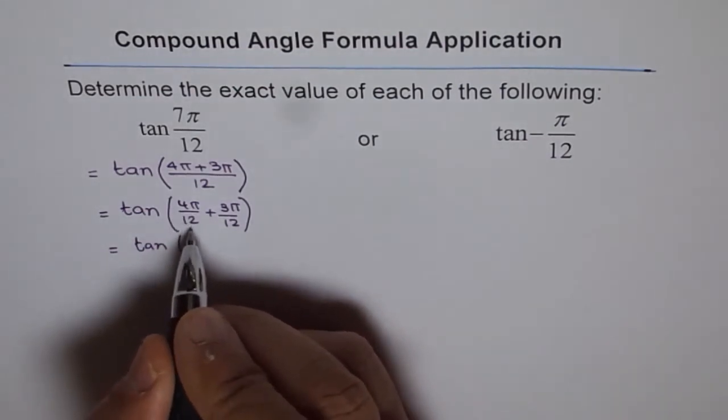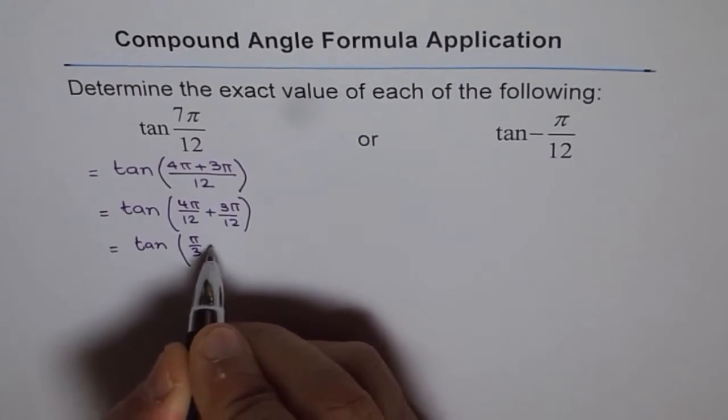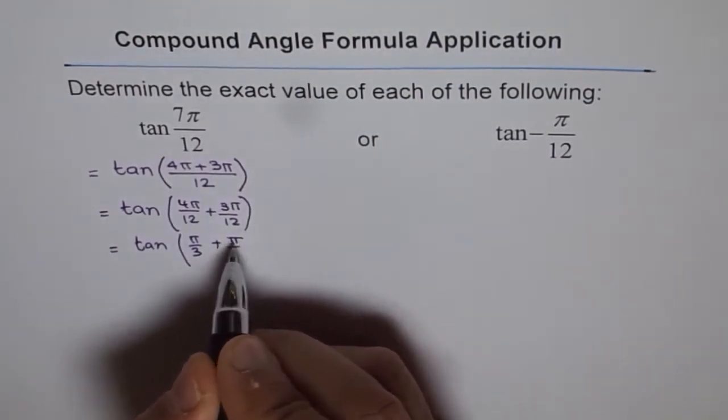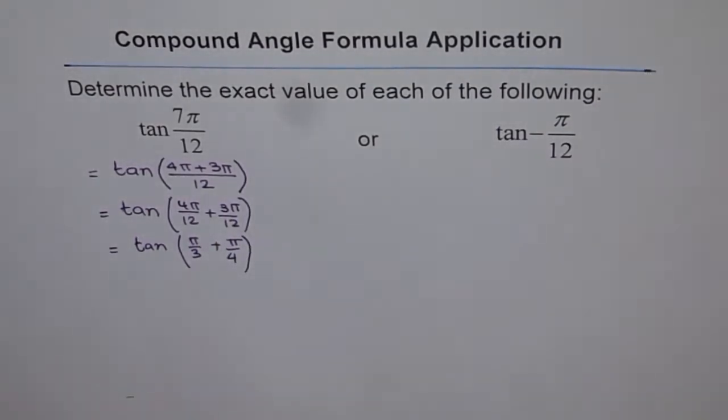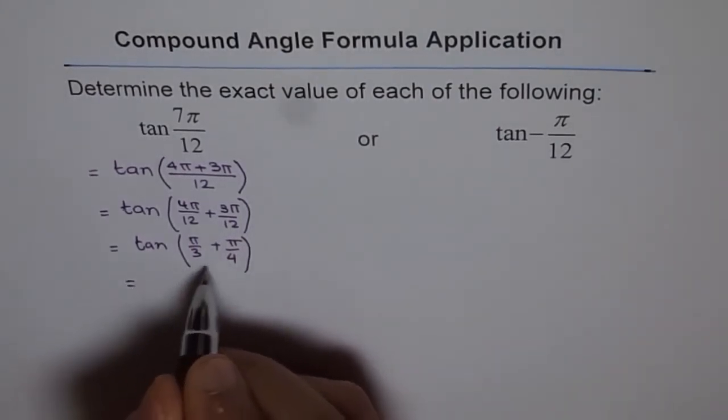So 4π/12 will be equal to, we can divide this and we get π/3 here. Do you see that? And that is a known number to us. And here when you divide this you get π/4. Correct? That's what it is. Now we know what π/3 and π/4 are. So we can really find the exact value. Let's expand it using the compound angle formula.